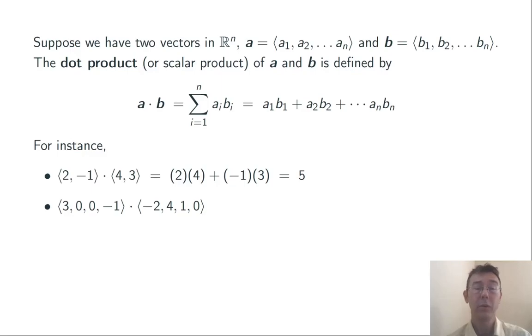⟨3, 0, 0, -1⟩ · ⟨-2, 4, 1, 0⟩. You're going to multiply the corresponding components, add up the results, and in this case, you get negative 6.